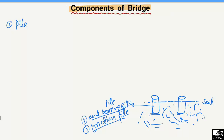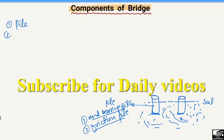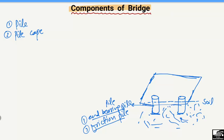After the construction of the pile, the next step is the pile cap. The second component of the bridge is the pile cap. After the construction of the pile, we construct the pile cap, which is mostly rectangular or square in shape depending on the bridge design.